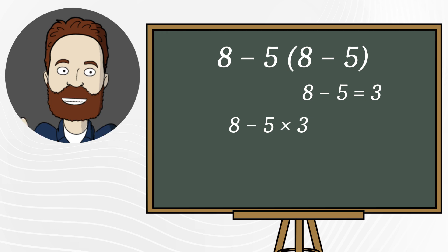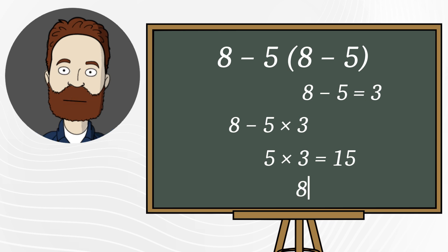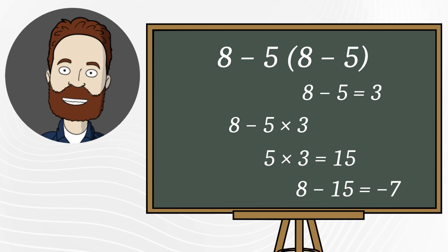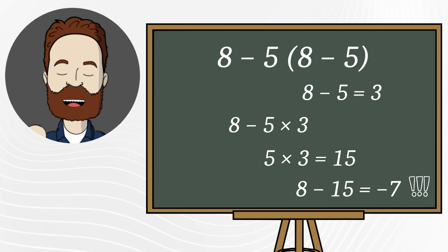Next, we handle multiplication. 5 times 3 equals 15. And finally, the subtraction. 8 minus 15 equals negative 7. So, the correct answer is negative 7.